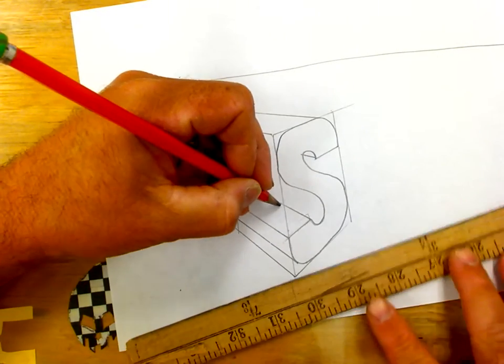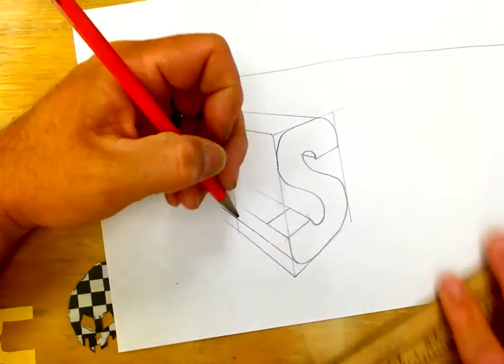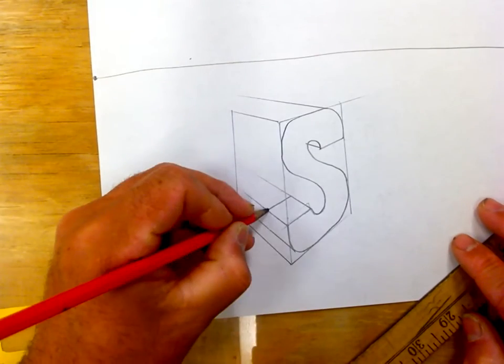Now, vanishing point. This is where you determine how thick you want it. Curve. Curve.